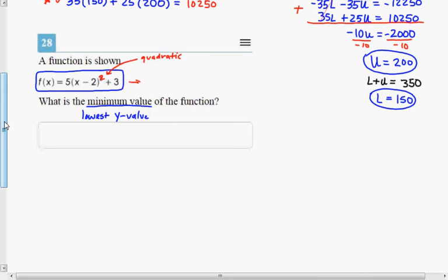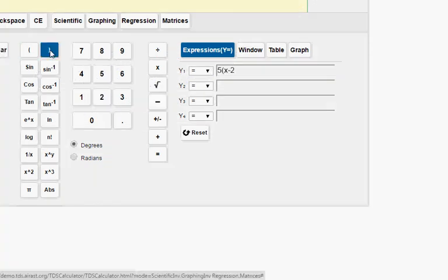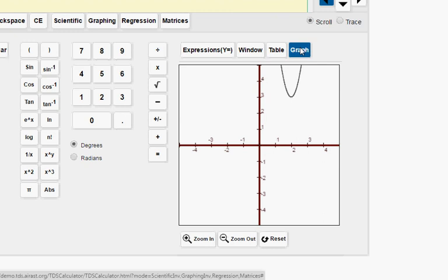Instead of f(x), remember we make it y equals 5 times the quantity x minus 2 squared plus 3. There are other ways to do this, but looking at the graph is the quickest way to accurately identify the minimum value of this function. So 5 times the quantity x minus 2 squared plus 3. Here's the equation, let's look at the graph.